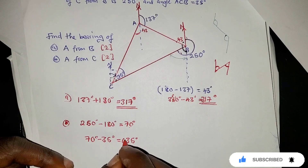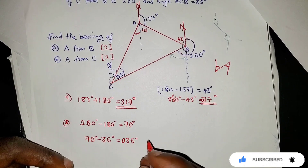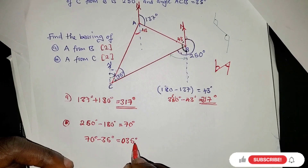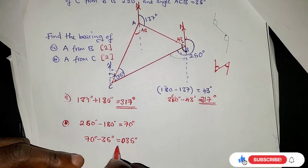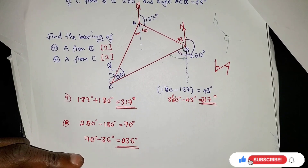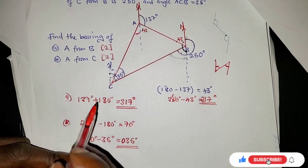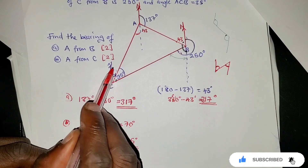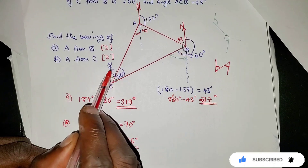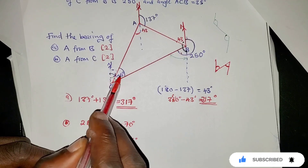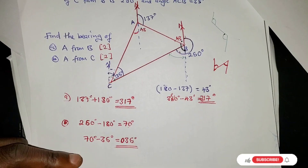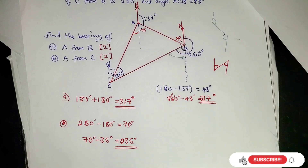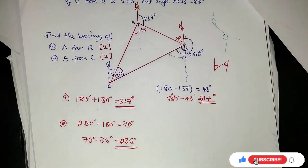Bearings are written as three digits, so 35° becomes 035°. This is the final answer for the bearing of A from C. To confirm: from north at C, the full angle to CB is 70°, and since angle ACB is 35°, the remaining angle to CA is 35°, written as 035°.